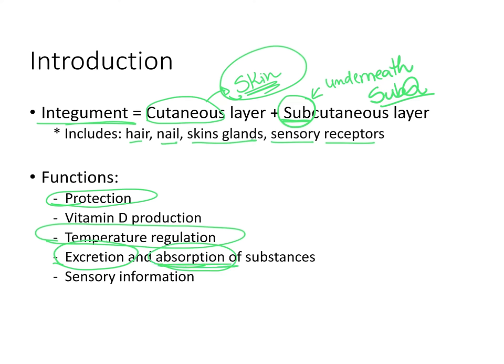When you touch something hot, you feel it. When you touch something cold, you feel it. If you enter a cold room, you feel it. You feel when someone touches your skin or holds your hand. Consequently, another function of the integument is sensory information — you are capable of sensing the external environment.